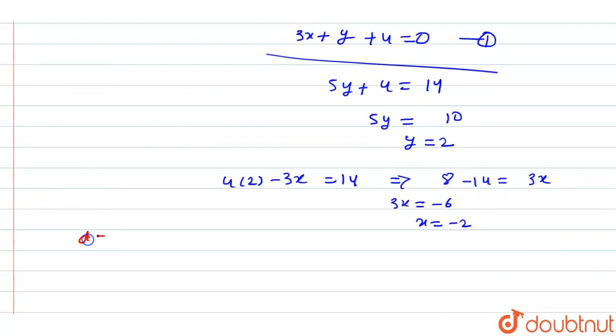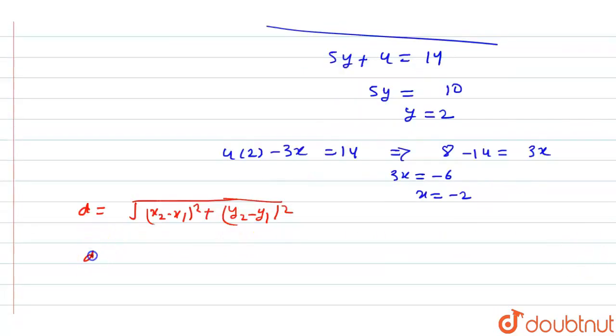The distance will be d = √[(x₂ - x₁)² + (y₂ - y₁)²].